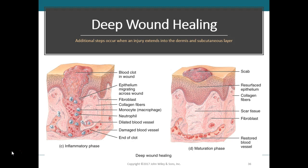The inflammatory phase brings in immune system cells and secretes chemicals that cause the inflammatory response. The next three phases do the actual work of repair. During the migratory phase, the clot becomes a scab, epithelial cells start to migrate beneath the scab to bridge and close the wound, and fibroblasts migrate and start making fibrin thread and collagen fibers that begin synthesizing scar tissue.